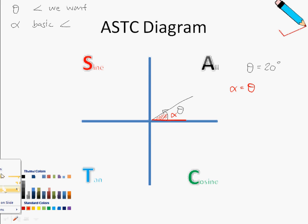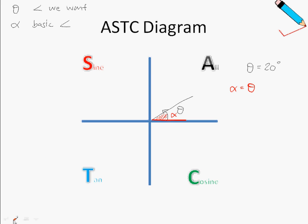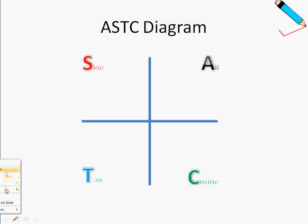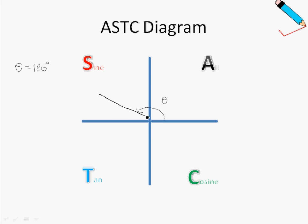Let's move on to what happens in the second quadrant. Suppose theta equals 120 degrees. Theta is measured from this point in an anti-clockwise direction all the way to here — this is my theta at 120 degrees. In the second quadrant, theta equals 180 degrees minus alpha.